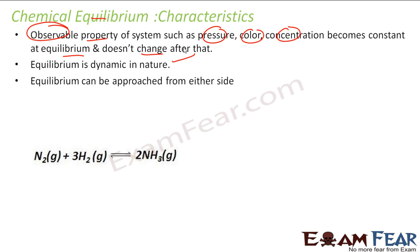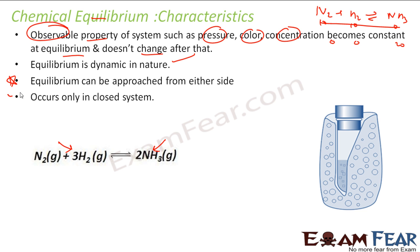The third property is equilibrium can be approached from either side. For example, you have N2 and H2 gives NH3. When you start with 10 moles of this, 10 moles of this and 0 moles of this, you will reach equilibrium. Or you start with 20 moles of this and 0 moles of this, then also you will reach equilibrium. It can be approached from either side. It happens only in the closed system.